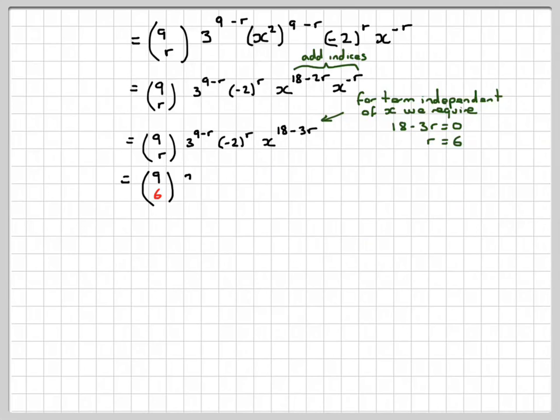So we've got rid of the x, so we're just left with 9c6, substituting for r, 3 to the 9 minus 6, minus 2 to the 6, x to the 0. But note that x to the 0 is now 1, so we've now got the term independent of x, there's no x in it. Sometimes this is referred to as the constant term. So it's 9c6, 3 cubed, times minus 2 to the 6.